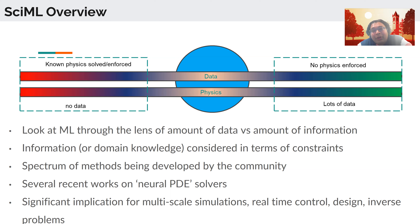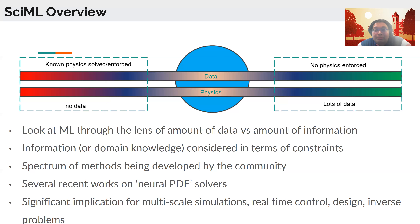For a lot of scientific computing problems, having tons of data is not easy. Simulations can be expensive, so creating input-output data pairs can become expensive — we might only have a finite number of them. So the limit of large amounts of data is not a feasible location for training machine learning models. The spectrum we are very comfortable with is on the far left side, where you potentially have no data but know everything about the system in terms of its partial differential equations, and you apply numerical solvers like finite element, finite difference, and finite volume methods to discretize and solve the system.